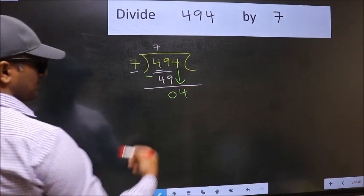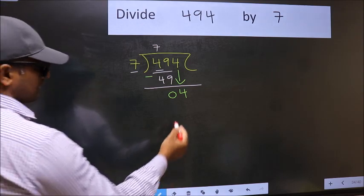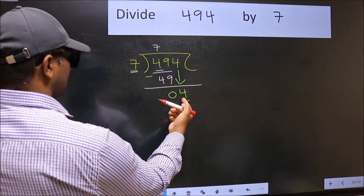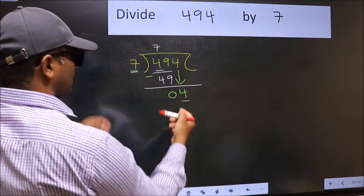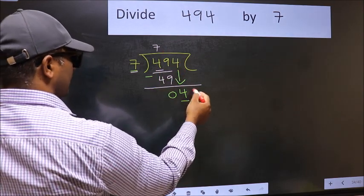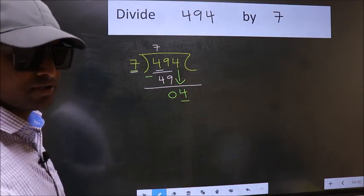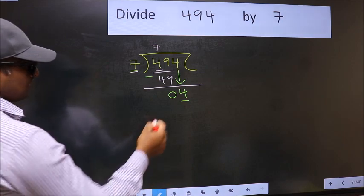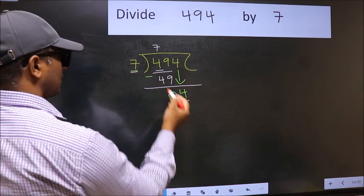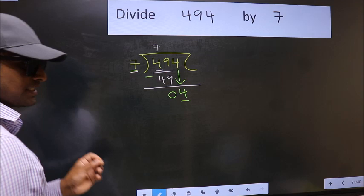After this step, the mistake happens. Here we have 4 and here 7. 4 is smaller than 7, so what many do is they directly put a dot and take 0, which is wrong. Why is it wrong? Because just now you brought this number down, and in the same step you want to put a dot and take 0, which is wrong.